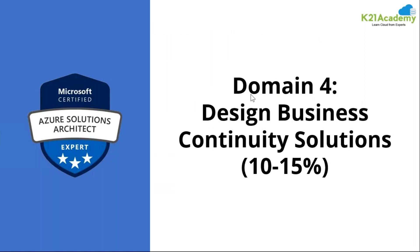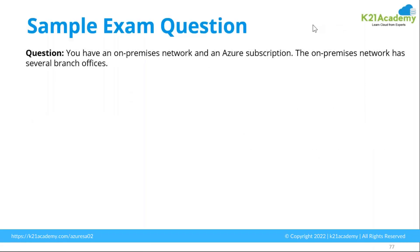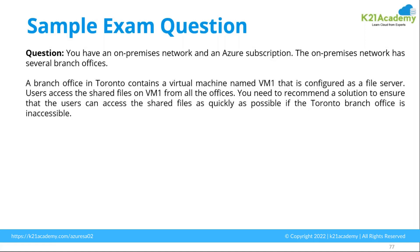Now going for the another module that we have: designing your business continuity. Most of the discussion is about DR and about your high availability requirement. So the sample question here: you have an on-premises network and your Azure subscription, and your on-premises network has several branch offices. A branch office in Toronto contains a virtual machine named VM1 configured as a file server. Users access shared files on VM1 from all the offices, and you need to recommend a solution to ensure that users can access the shared file as quickly as possible when the Toronto branch office is inaccessible.